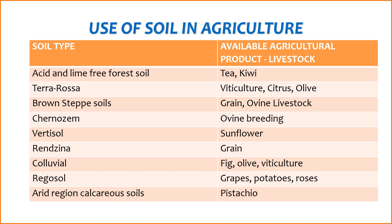Soil types and corresponding agricultural products and livestock in Turkey: 1. Acid and lime-free forest soil — agricultural products: tea, kiwi. 2. Terra rosa — agricultural products: viticulture, citrus, olive. 3. Brown steppe soils — agricultural products: grain, livestock, ovine livestock. 4. Chernozem — livestock: ovine breeding. 5. Vertisol — agricultural products: sunflower. 6. Rendzina — agricultural products: grain. 7. Colluvial — agricultural products: fig, olive, viticulture. 8. Regosol — agricultural products: grapes, potatoes, roses. 9. Arid region calcareous soils — agricultural products: pistachio.